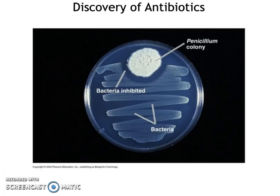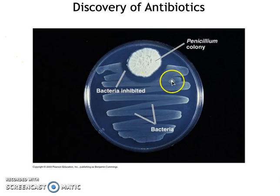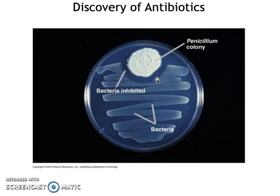They were discovered by Alexander Fleming in the 1920s when he accidentally got a contamination on one of his bacterial petri plates — it would have looked something like this. He was trying to grow Streptococcus pneumoniae because he was trying to figure out a way to treat pneumonia, and he accidentally got some fungi on his plate. This likely just came from the air naturally.